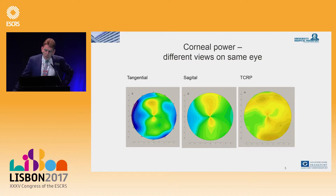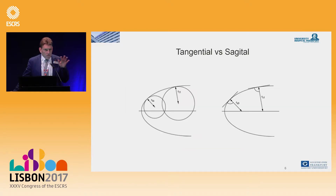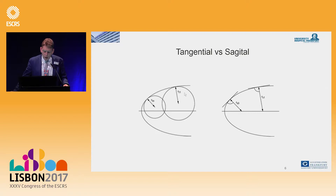Looking at corneal power — different views on the same eye. This is a tangential map taking the anterior curvature. This is a sagittal map looking at more points. Comparing tangential and sagittal maps: the tangential takes a tangent at each point to produce a picture for evaluation.